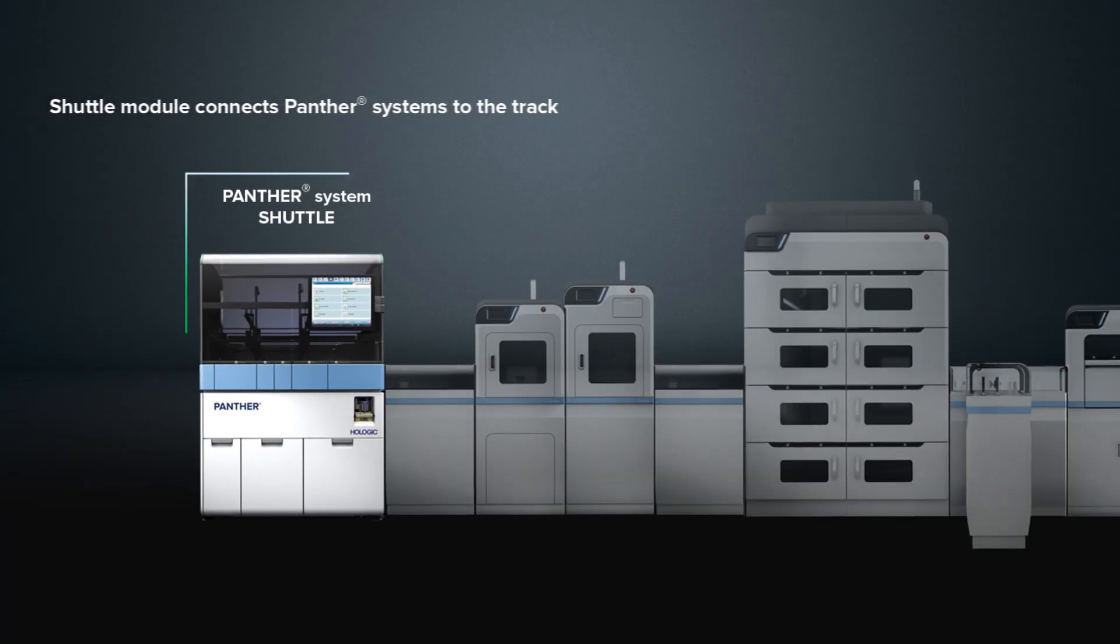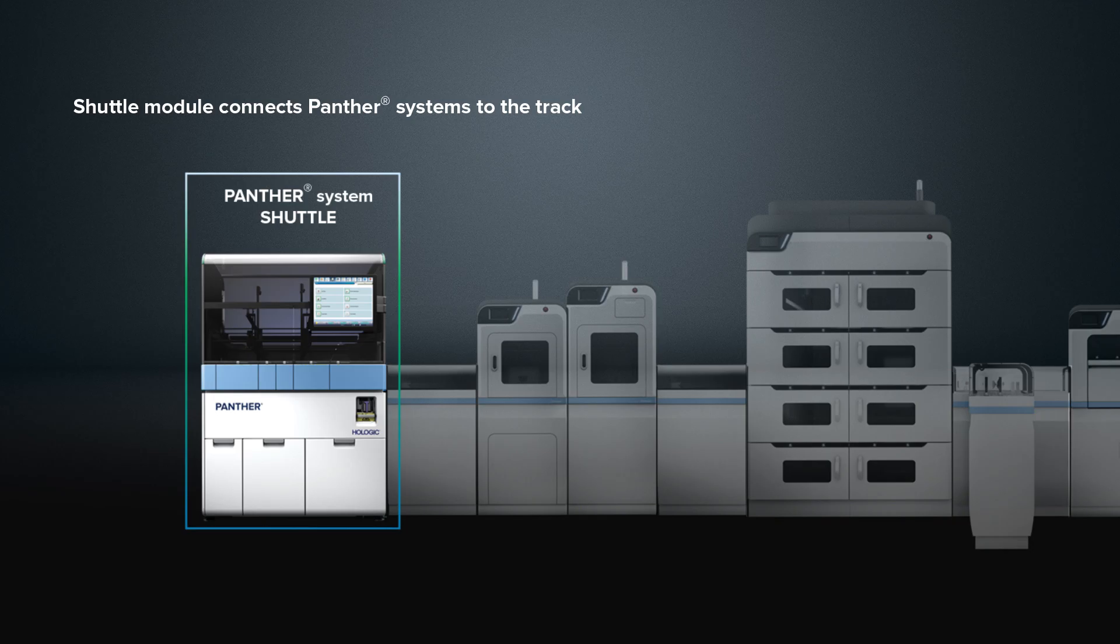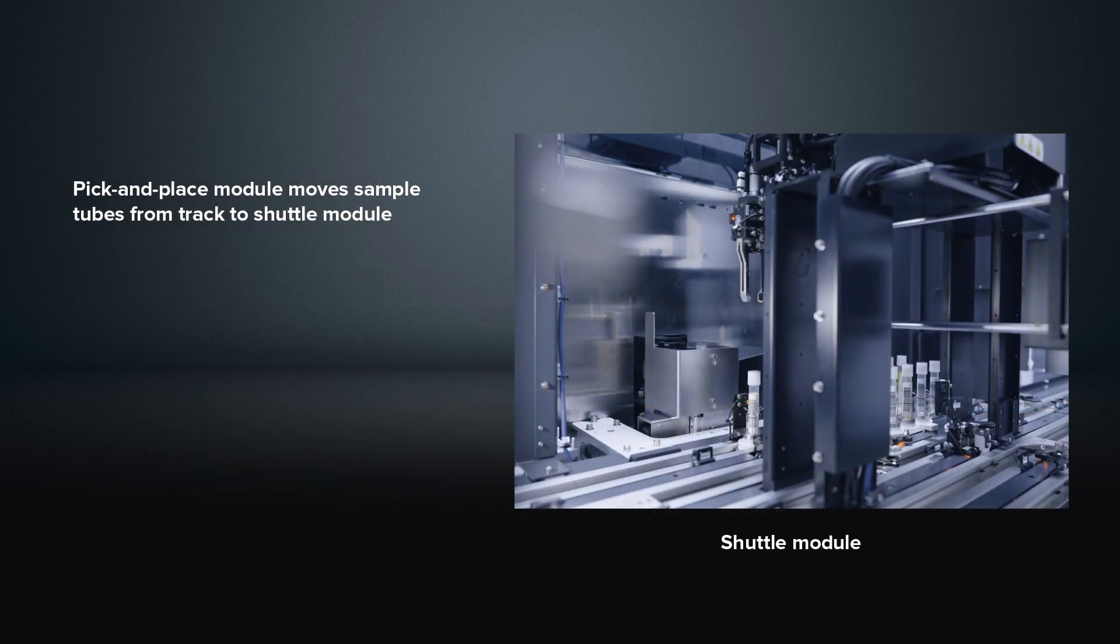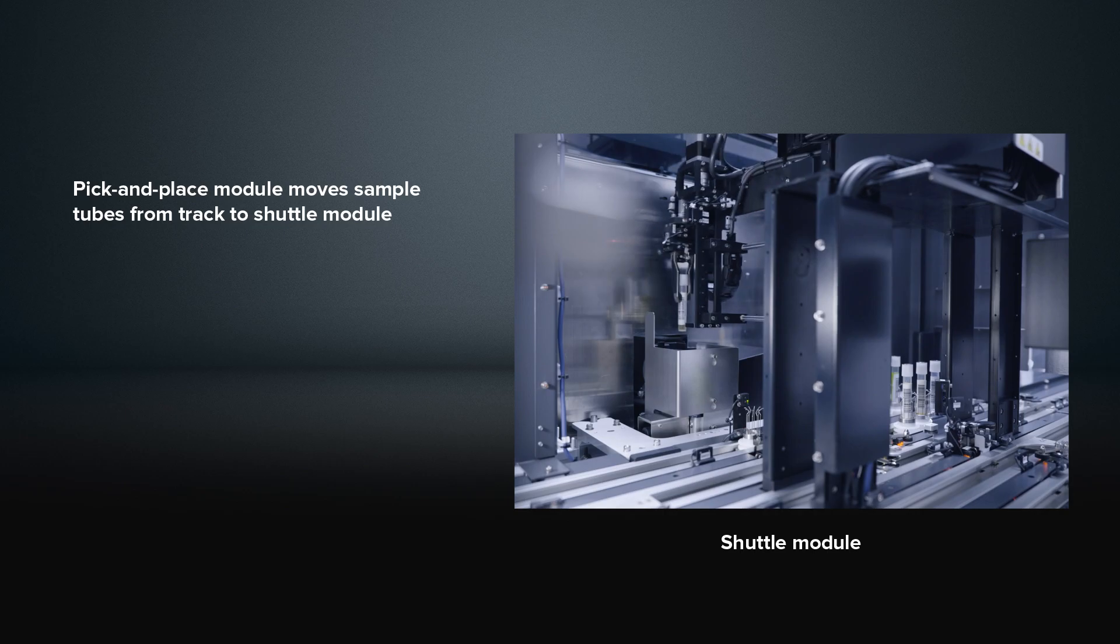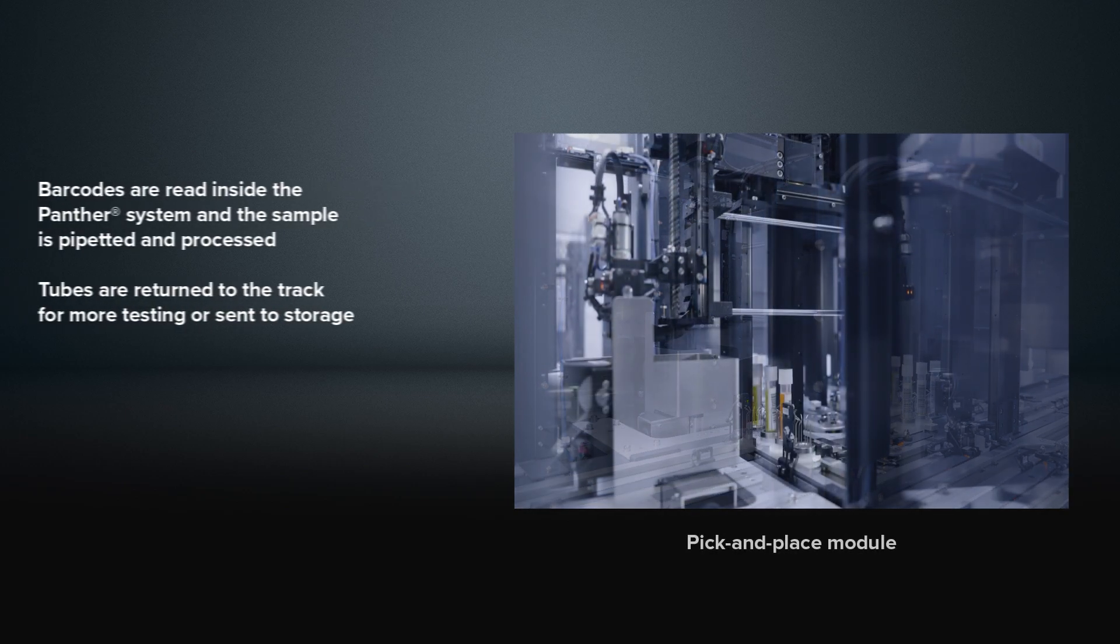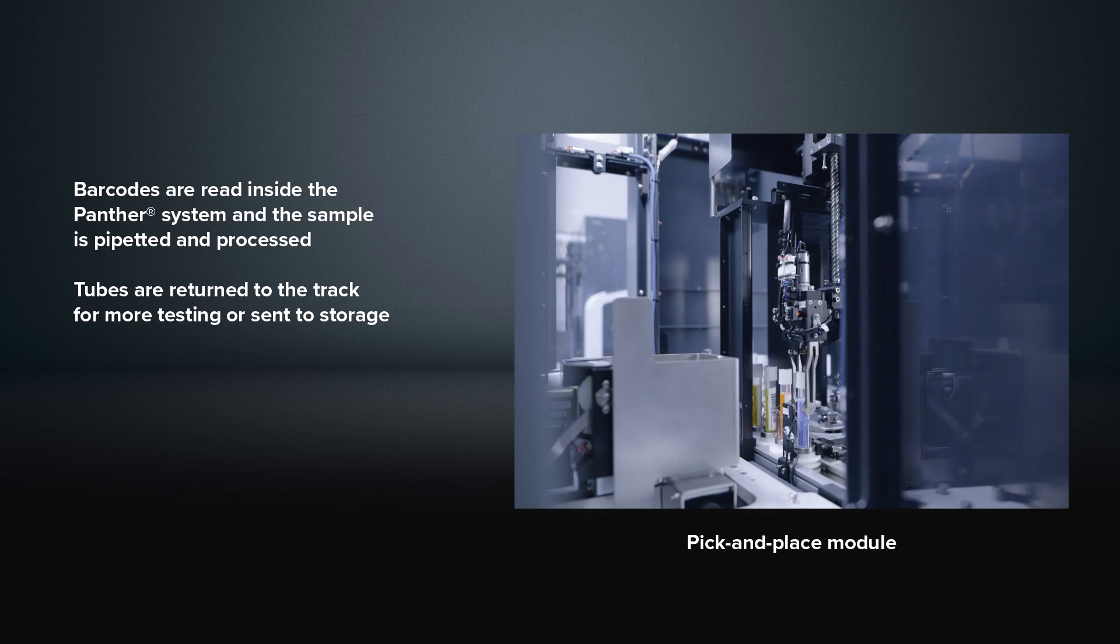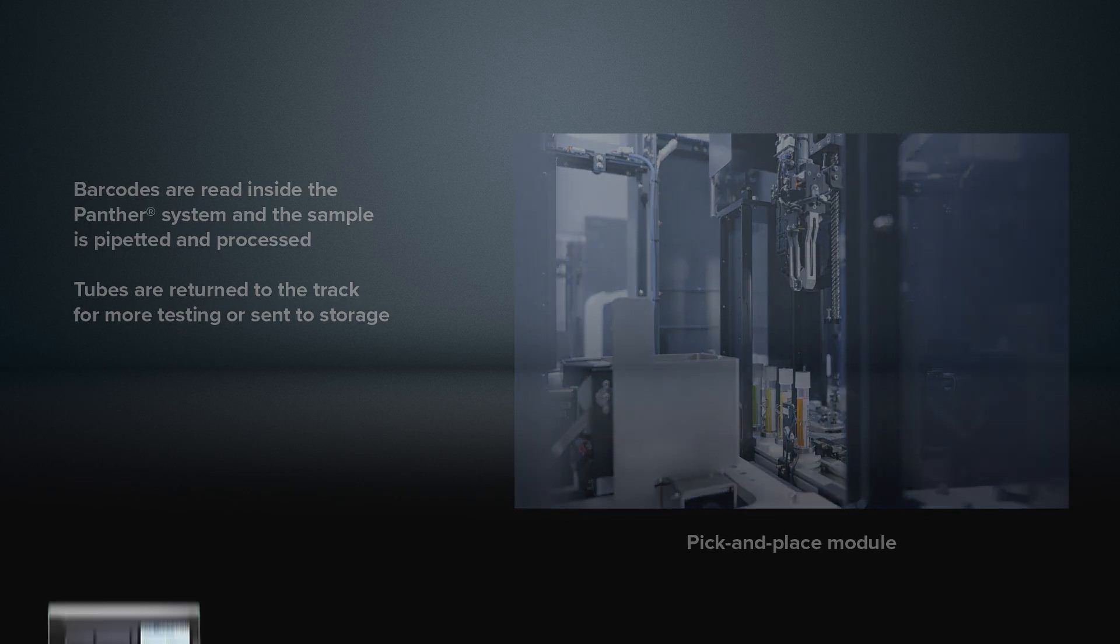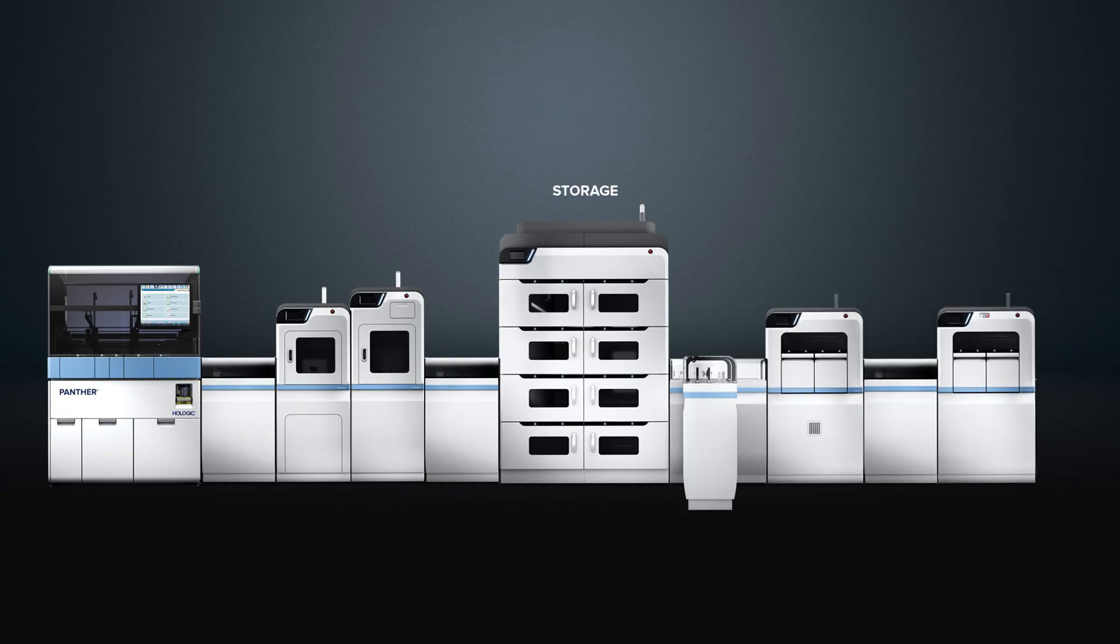The Panther systems are connected to the track via the Shuttle module, which receives samples from the Pick and Place module on the track. Once inside the Panther system, samples are pipetted and processed and then returned to the track for additional testing if needed, or sent directly to storage.